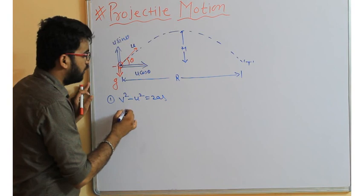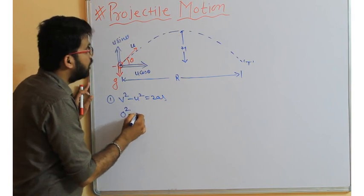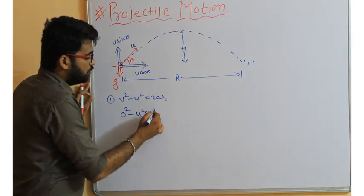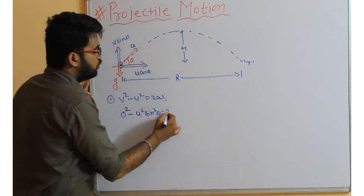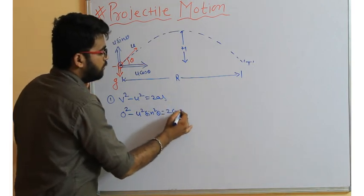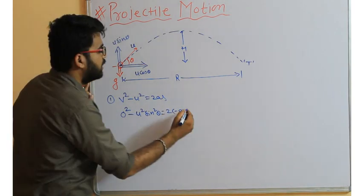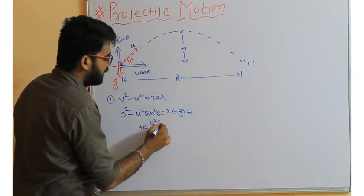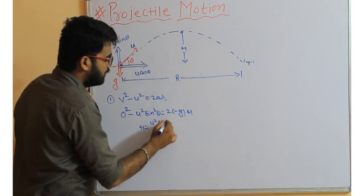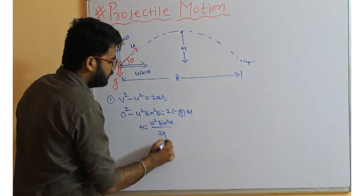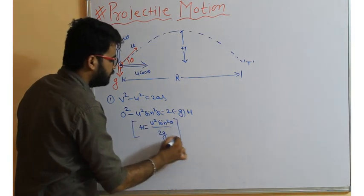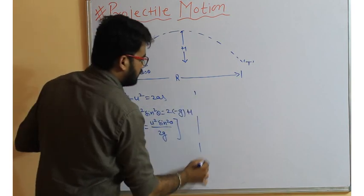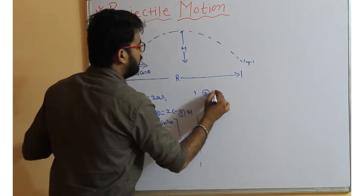So 0² = u² sin²θ = 2 × (-g) × H, where g acts downward. You will get H = u² sin²θ divided by 2g. That's it — this is the maximum height formula.